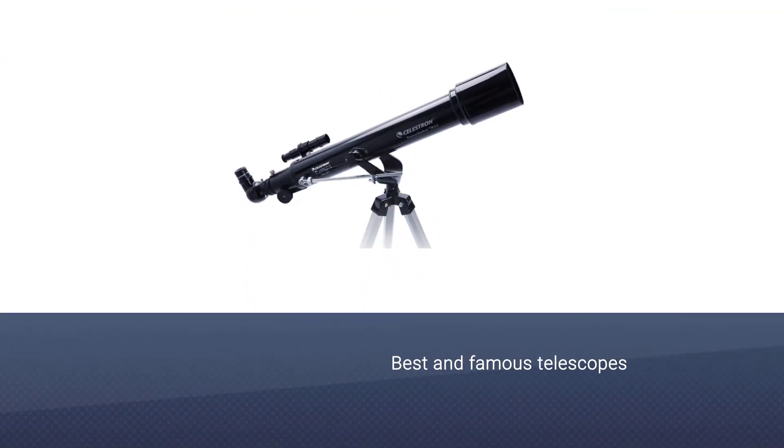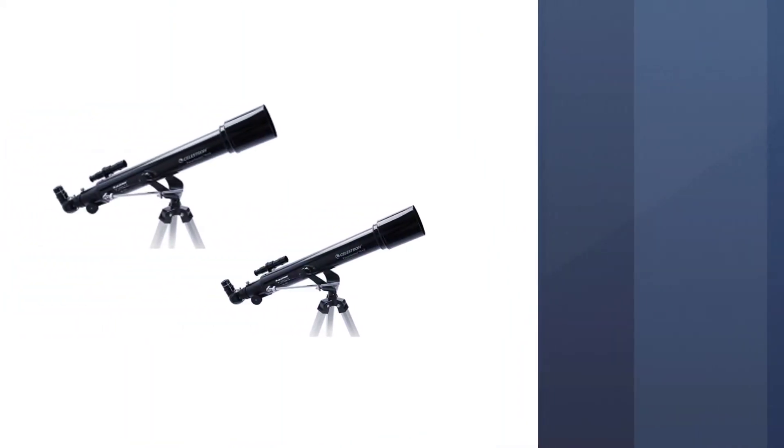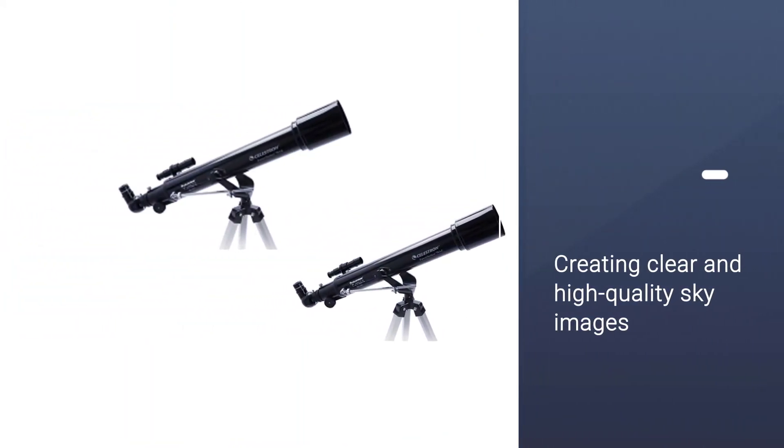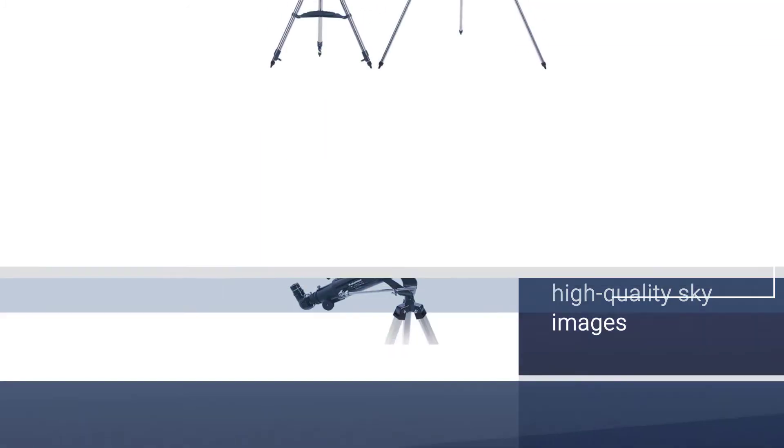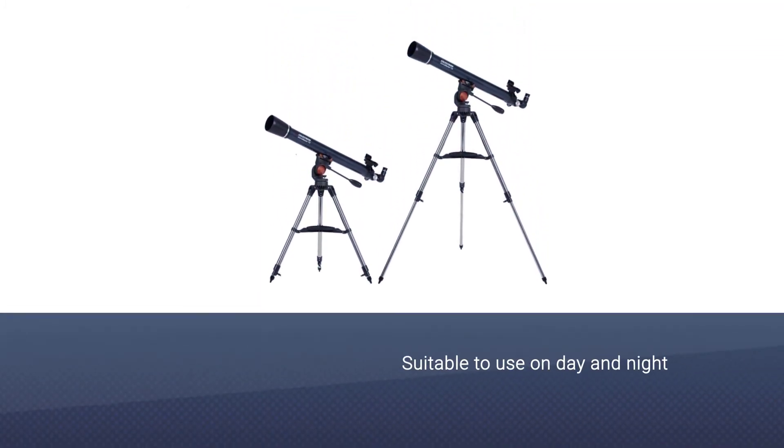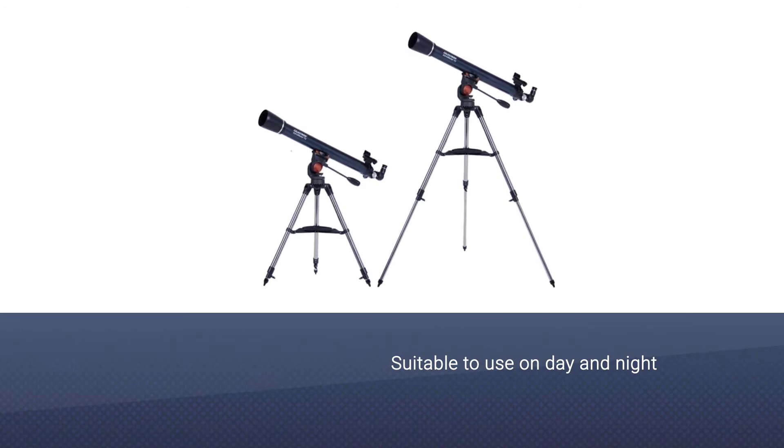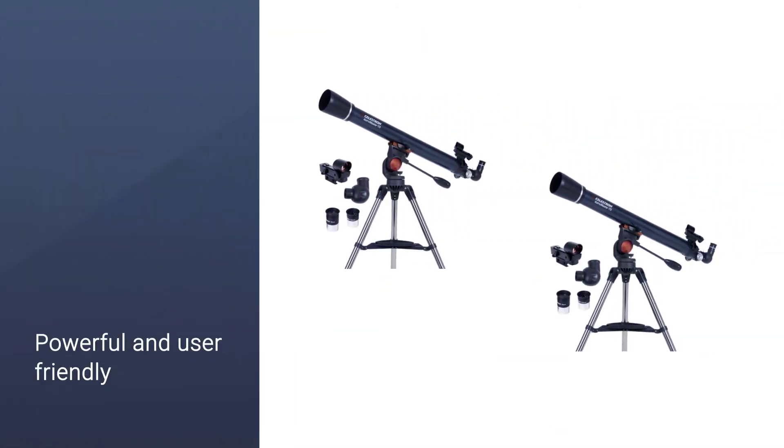Number three: Celestron AstroMaster 70 AZ Telescope. Celestron AstroMaster is one of the best and famous telescopes. It provides the best views of Saturn's rings, Jupiter's moons and more. The telescope is known for creating clear and high quality sky images both day and night.